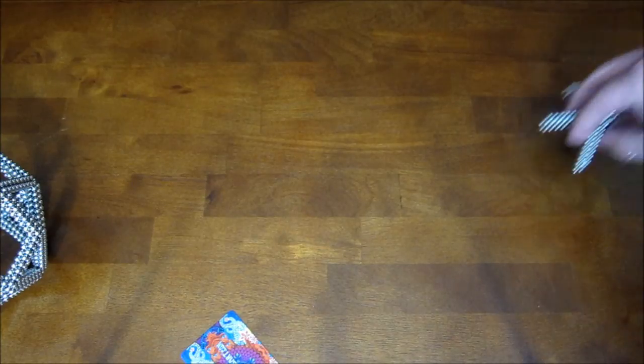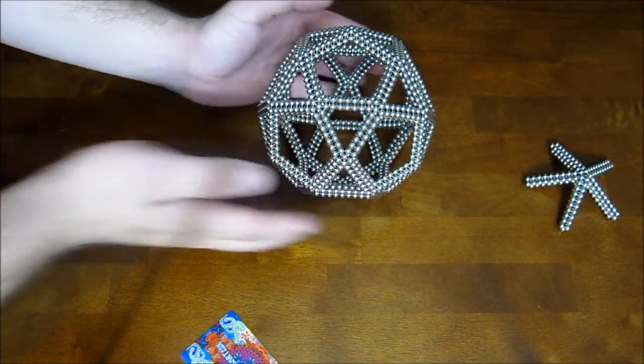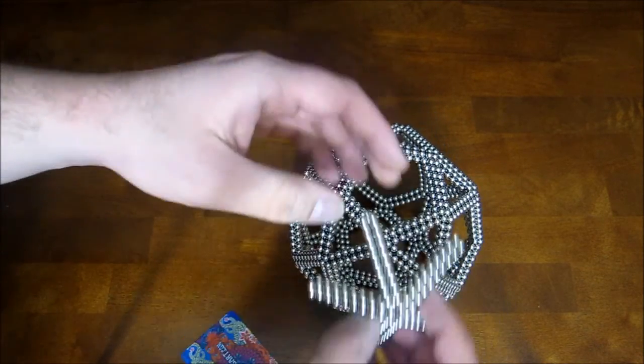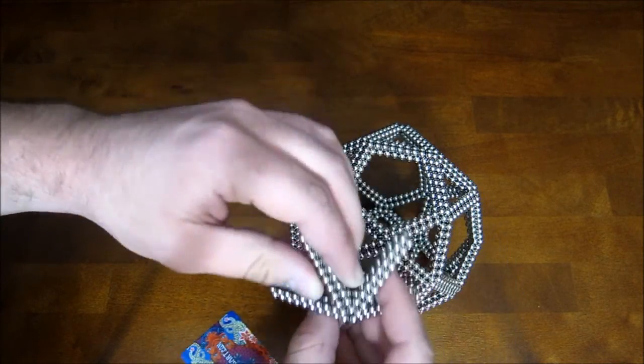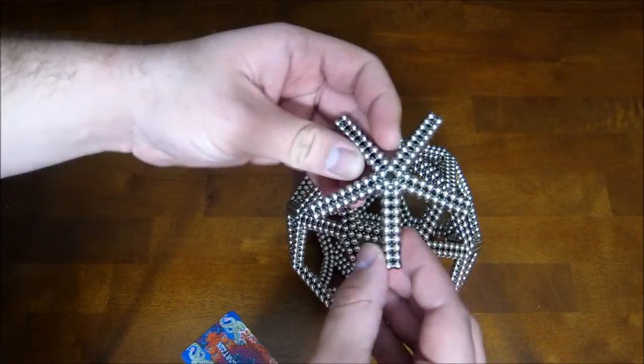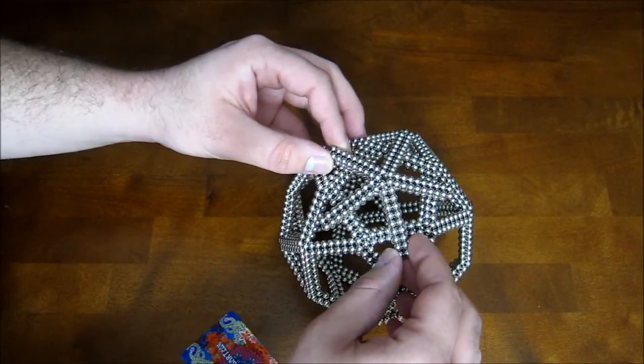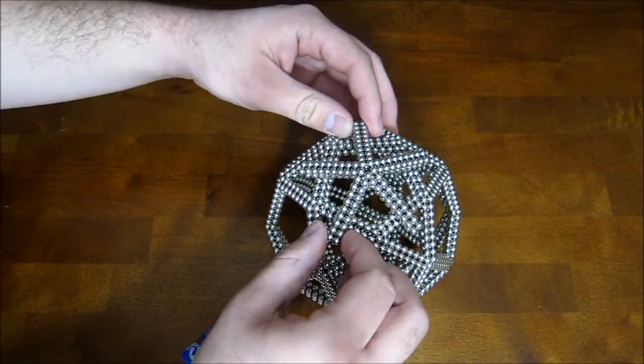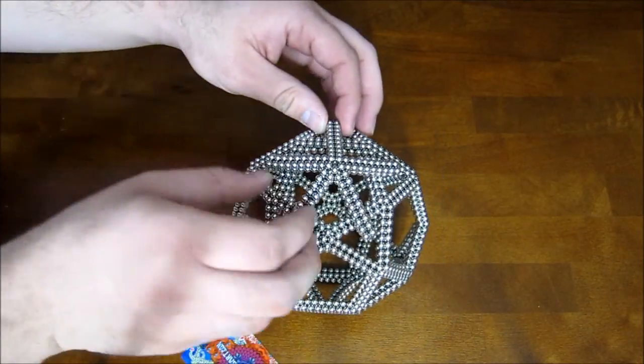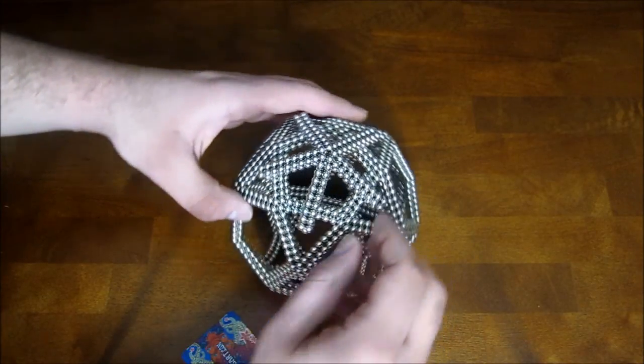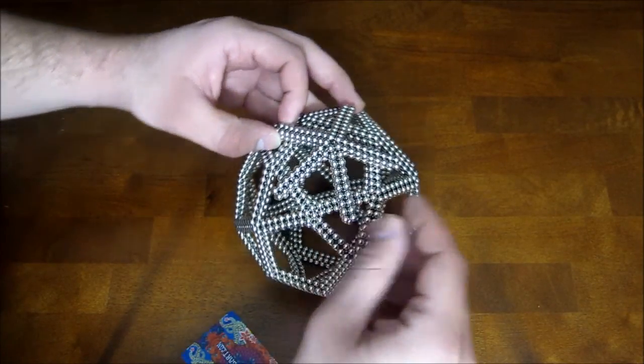So now that you have all the subunits from the stellated icosidodecahedron and also the 12 of these, to start assembling this thing, what you want to do is take these and set them down on top of the pentagonal faces here. So this one will go down just like that. It's not really attaching to anything, you'll notice. It's just kind of resting. There's a little bit of an attractive force, but it's not a whole lot. So you want to make sure it's nice and symmetric, that everything is even all the way across.